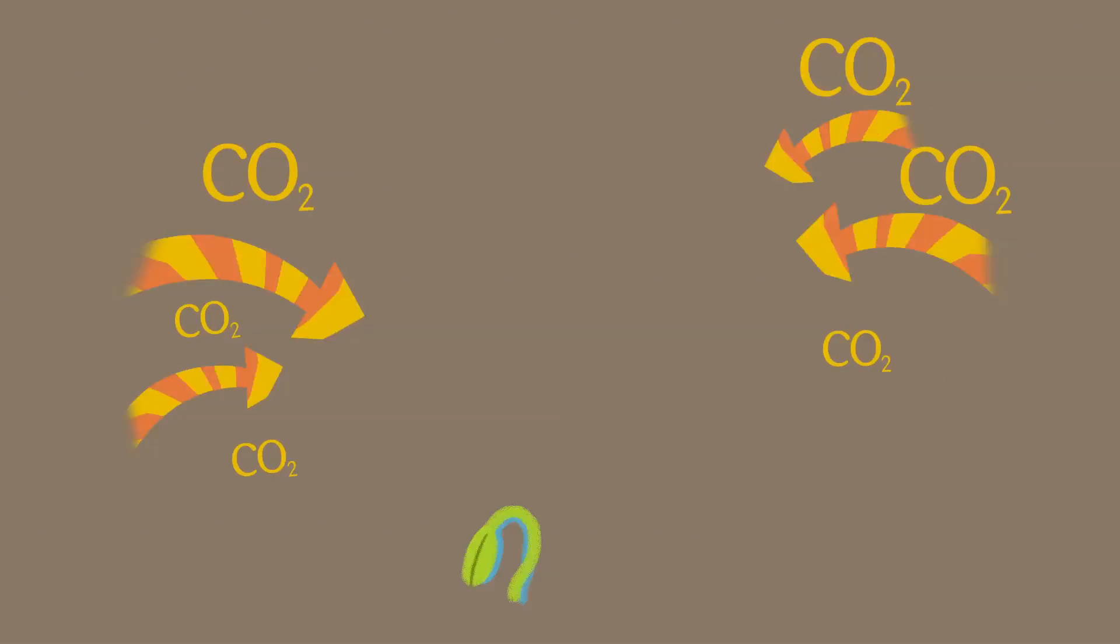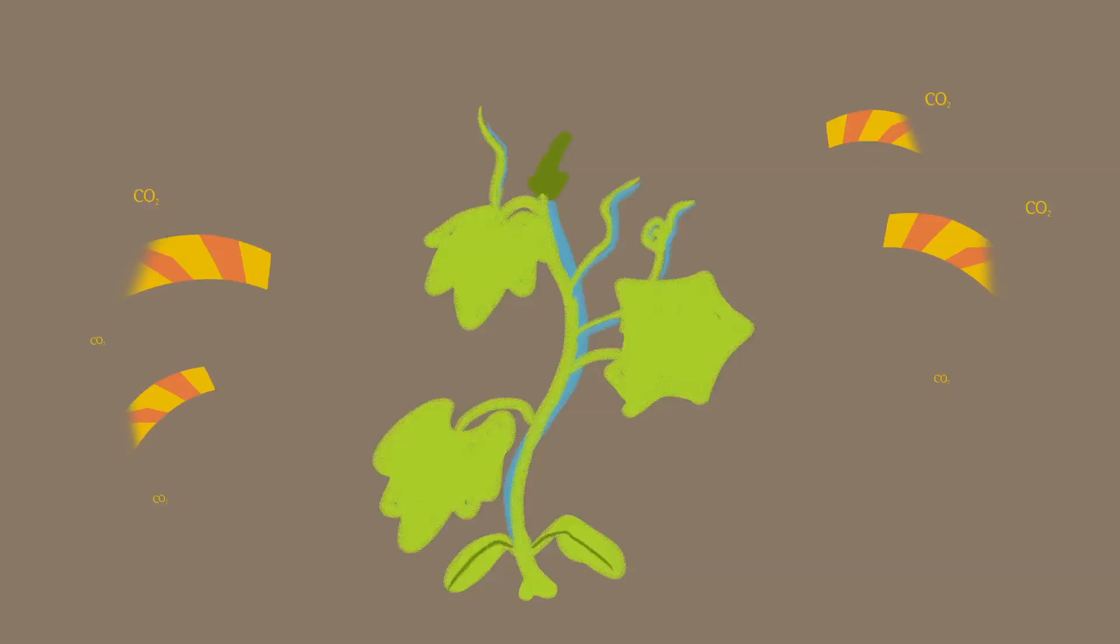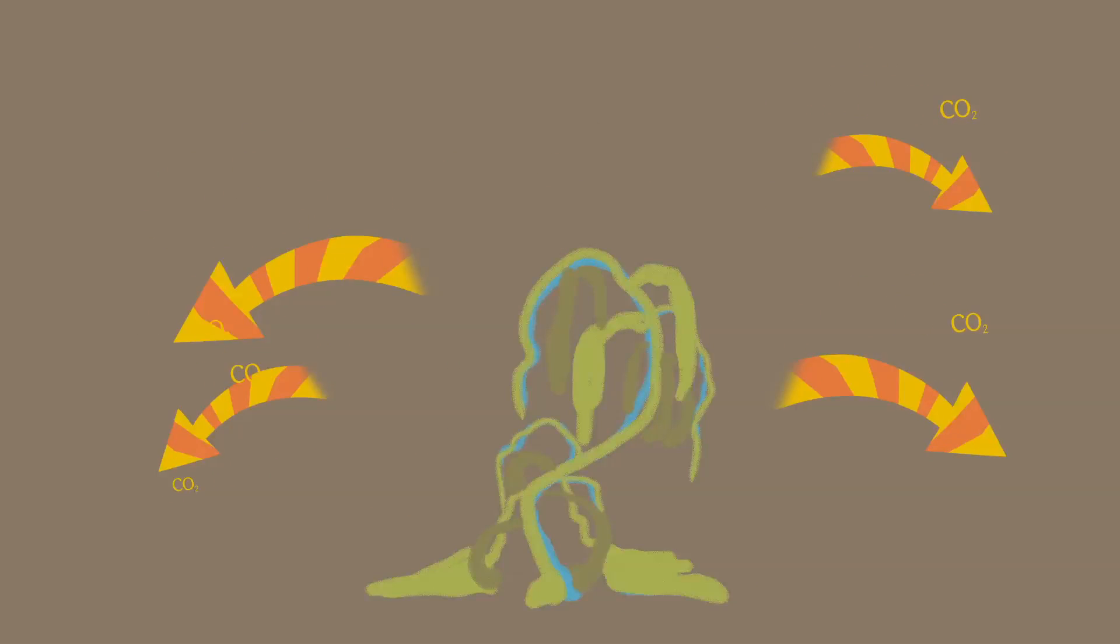So how does this work? Well, as plants grow, carbon dioxide is absorbed, and as they die and decay, carbon dioxide is released.